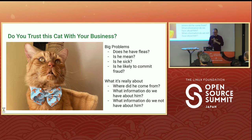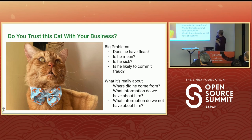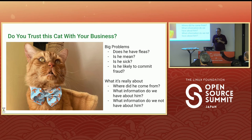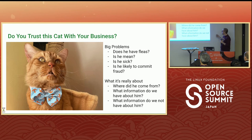Where did this cat come from? What information do we have about him? And almost just as important: what information do we have about him? What information do we not have about him?